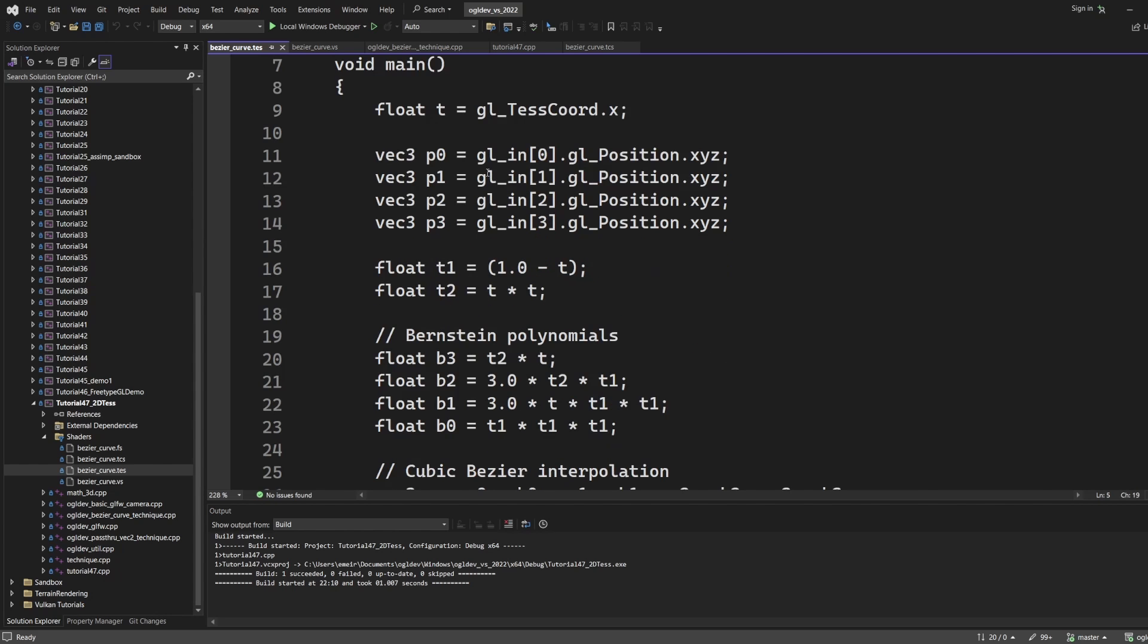First of all we need to remember that by now the tessellator has already been executed so the results for the current output vertex are waiting in the internal variable gl_TessCoord. This is a 3D vector but in the case of isolines or quads the third component is always zero. We have configured the tessellator to subdivide a single line so only the X component contains actual data. This value of course can go from 0 to 1. Next we extract the 4 control points from the gl_in array. They have skipped the tessellator and went directly from the TCS to the TES.